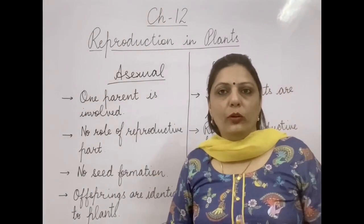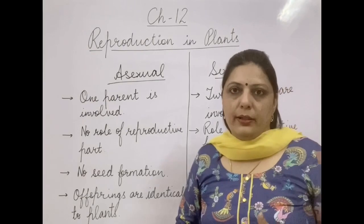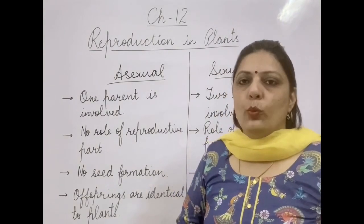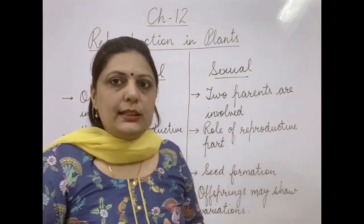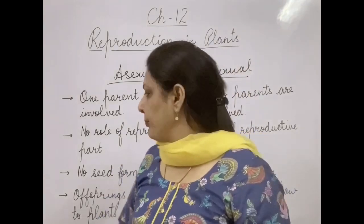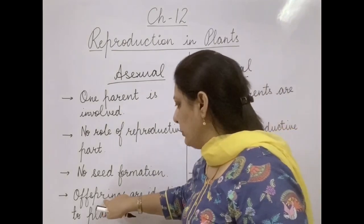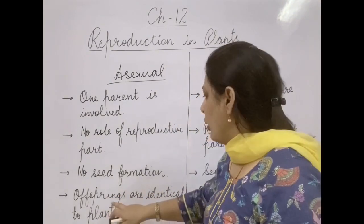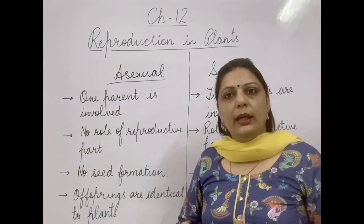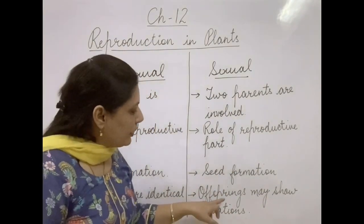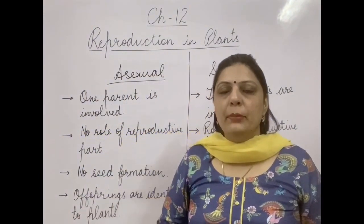Because there is no role of the flower in asexual reproduction, seed formation does not take place, whereas in sexual reproduction the flower leads to seed formation, and those seeds help form the next generation plant. Furthermore, offspring in asexual reproduction are identical — exactly similar to the parent plant — whereas in sexual reproduction offspring may show variations, meaning they will not be exactly the same and will differ from their parent in some ways.